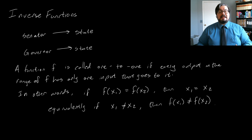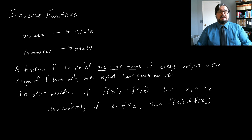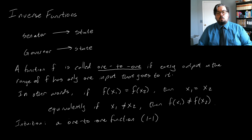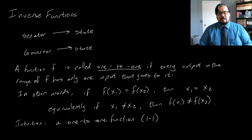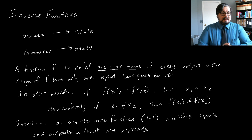These are all different ways of saying the same thing. Any function which satisfies these properties is called one-to-one. A one-to-one function — also sometimes written as 1-1 — matches inputs and outputs without any repeats, either in inputs or in outputs.